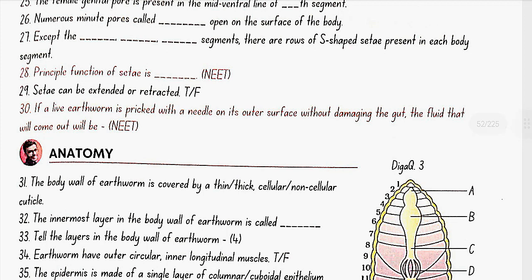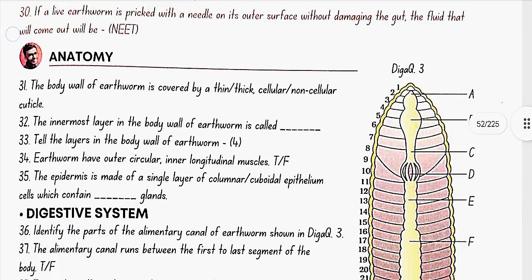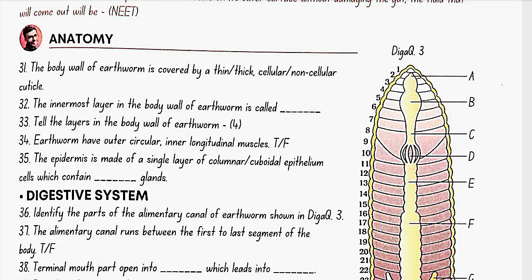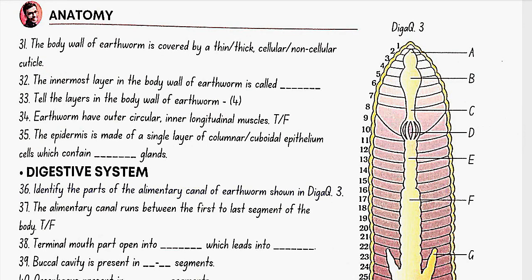If a live earthworm is pricked with a needle on its outer surface without damaging the gut, the fluid that will come out will be coelomic fluid. Anatomy: The body wall of earthworm is covered by a thin non-cellular cuticle. The innermost layer in the body wall is called coelomic epithelium. The layers in the body wall are: epidermis, two muscle layers (circular and longitudinal), and an innermost coelomic epithelium. Earthworm has outer circular and inner longitudinal muscles — yes, true. The epidermis is made of a single layer of columnar epithelium cells which contain secretory glands.